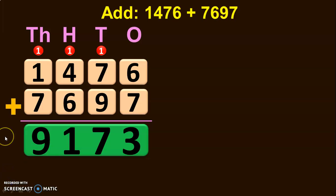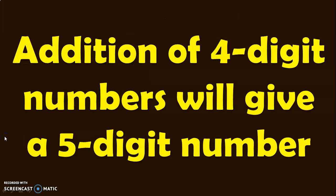So far we saw regrouping in the ones, tens, and hundreds place. The sum of the two 4-digit numbers gave the answer in 4 digits only. Sometimes you will have to regroup the digits in the thousands place as well. When you add two 4-digit numbers, you might get a 5-digit number. Let us see examples for such a concept.